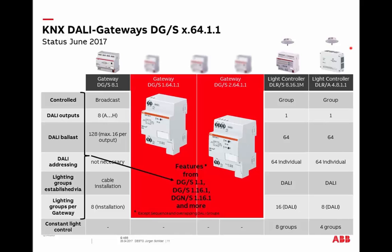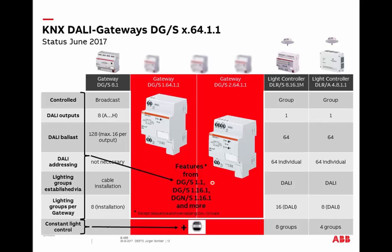Constant light control is not directly integrated in the new gateways — we can still use our existing components DLRs or DLRA. But another option for constant light control is to use our KNX presence detectors: the premium version has an integrated light sensor and constant light control software, and you need only a further dimmer to create a complete solution. This is already done frequently using our existing DALI gateways, and of course it is also possible with the new ones.